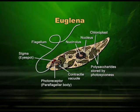Paramecium is also a unicellular organism and it moves very fast with the help of cilia. Coming to Euglena, which is another single-celled organism, it has a long whip-like flagella which helps in locomotion. So these three belong to unicellular organisms.